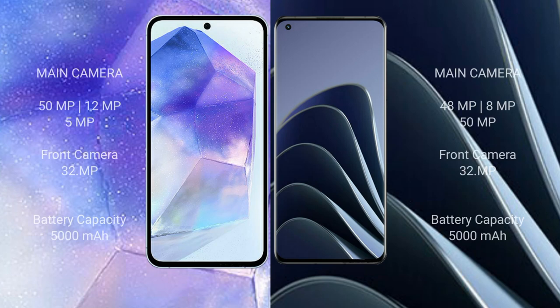Samsung Galaxy A55 features a rear triple camera setup of 50MP + 12MP + 5MP, and a 32MP front camera. OnePlus 10 Pro features a rear triple camera setup of 48MP + 8MP + 50MP, and a 32MP front camera.